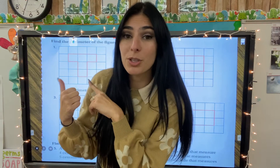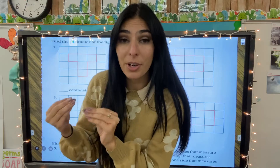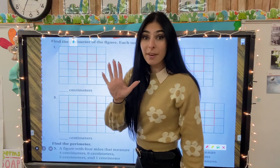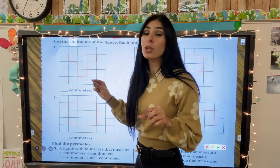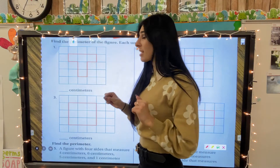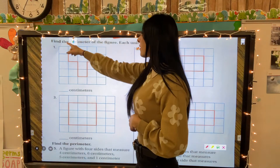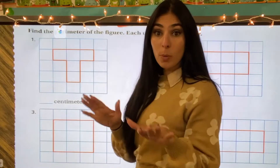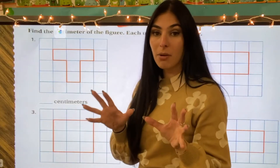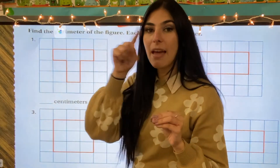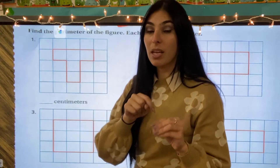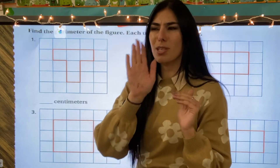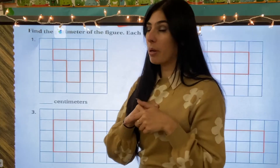Behind me I have some shapes, so we're going to find the perimeter of these shapes. It is very important to read the directions so we know the value of each little square and what it represents. Figure out the perimeter of the figure — each unit is one centimeter. We have to be really careful when counting the perimeter to make sure that we count every single outside unit, not just one square, because one square is going to be the area. We're looking for the perimeter.